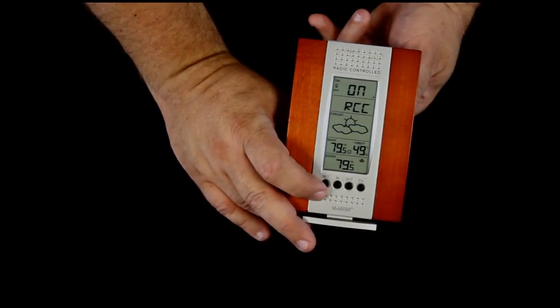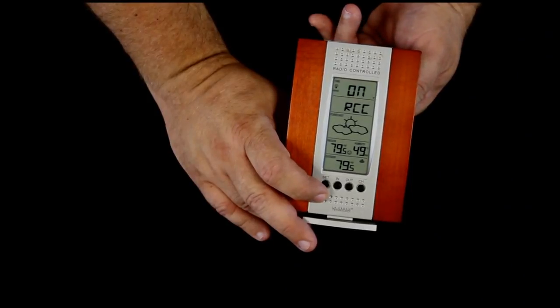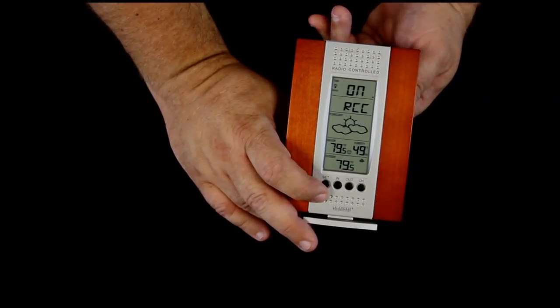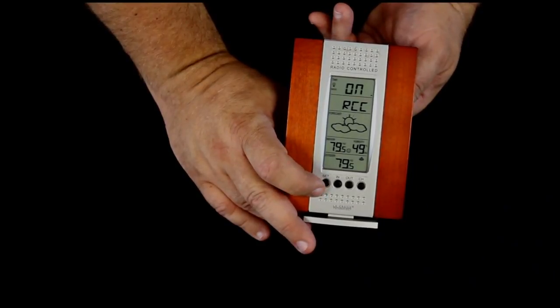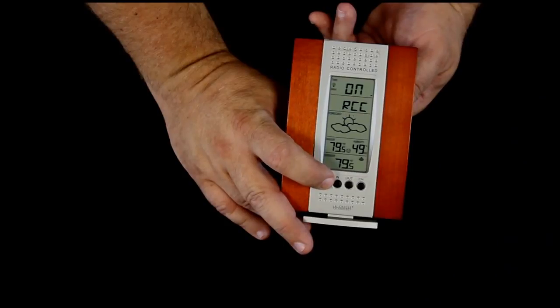Pressing set once again, RCC, radio control clock, we want that on. That allows the clock to receive the signal from Fort Collins, Colorado, and automatically set the time, the date, the day, and the daylight savings time mode.